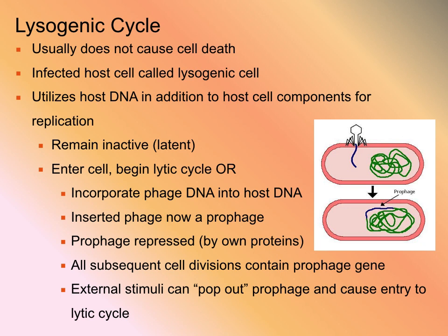At some point in time, this prophage is going to be stimulated by some kind of environmental or external stimulus and will be signaled to excise back out of the host genome in order to move back into the lytic cycle. There are bacterial cells that may remain as a prophage for their entire life cycle, but somewhere down the road this prophage is going to pop out, move to a lytic cycle, and become a mature virion again.